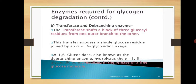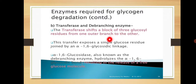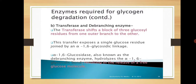The second enzyme is transferase and debranching enzyme. Transferase transfers — it shifts a block of 3 glucose residues from one branch to another. The transfer exposes a single glucose residue joined by an alpha-1,6 glycosidic linkage. Glycogen phosphorylase sequentially cleaves glucose units, and the transferring process is carried out by transferase.